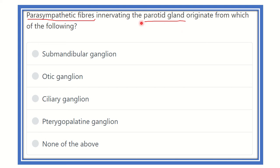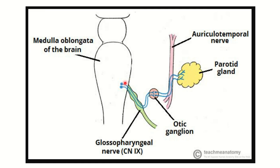We have to find out which option is compatible with the answer. Here we can see the parotid gland — this is one of the salivary glands. It receives supply from this nerve, which is the glossopharyngeal nerve, cranial nerve number nine. Cranial nerve nine goes to the otic ganglion, and from there the fiber goes to the parotid gland and supplies it.